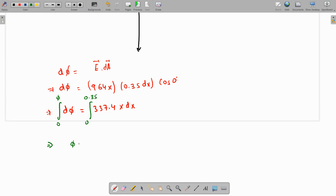So the total flux is going to be equal to 337.4 and the integration is X squared over 2 and we place the limits from 0 to 0.35. So this is going to be equal to, we multiply this with 337.4 times 0.35 square over 2. So the total flux is coming as 20.67.